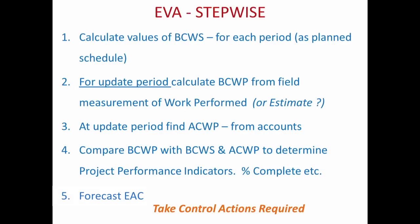Looking at earned value in a step-wise way: the first step is to calculate the budgeted cost of work scheduled (BCWS) for each period. From the bar chart, we take a month-wise planned cost at each month to plot the S curve as well as the monthly expenditure which is the BCWS.